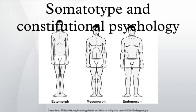Endomorphic: characterized as round, usually short and soft, with underdeveloped muscles and having difficulty losing weight. Described as viscerotonic — enjoying food, people, and affection — having slow reactions, and being disposed to complacency.